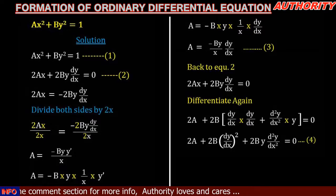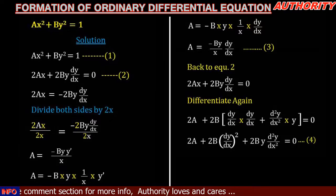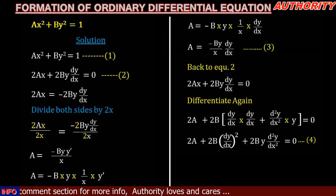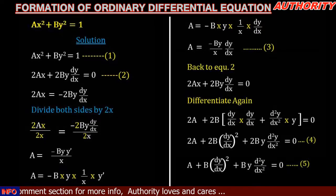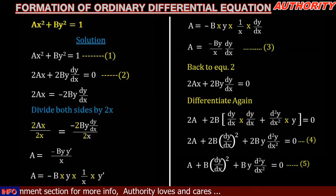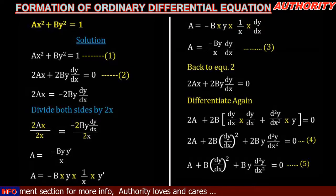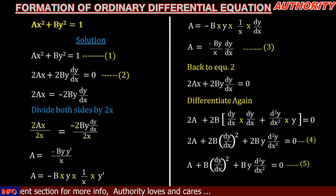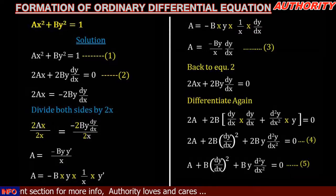We can see that every term has a factor of 2. So we divide through by 2, giving: a + b(dy/dx)² + by·d²y/dx² = 0. Let's call this equation 5.